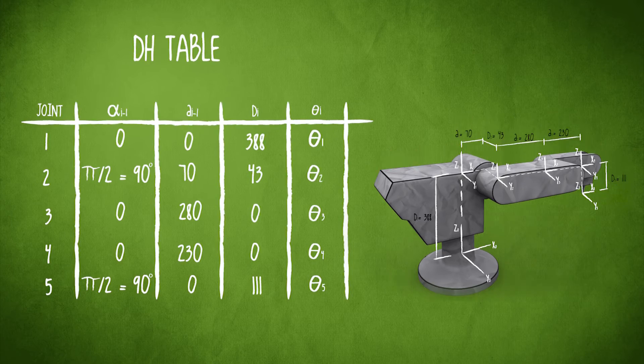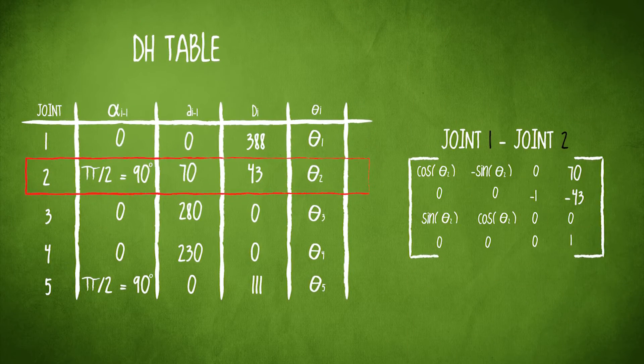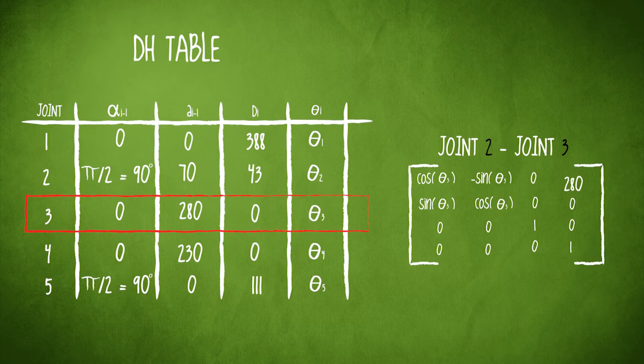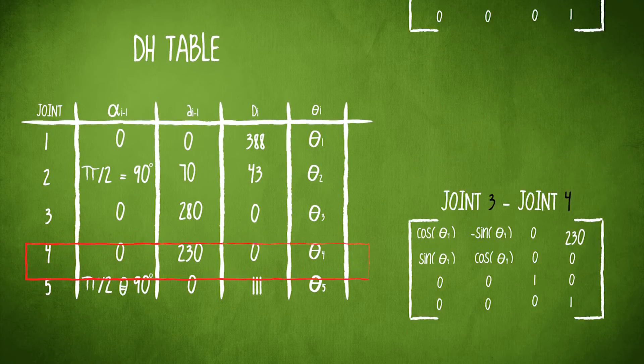This is where the matrices really come into play. Using the accumulated joint values from the DH table, we build up a new DH matrix for each joint, creating 5 matrices.